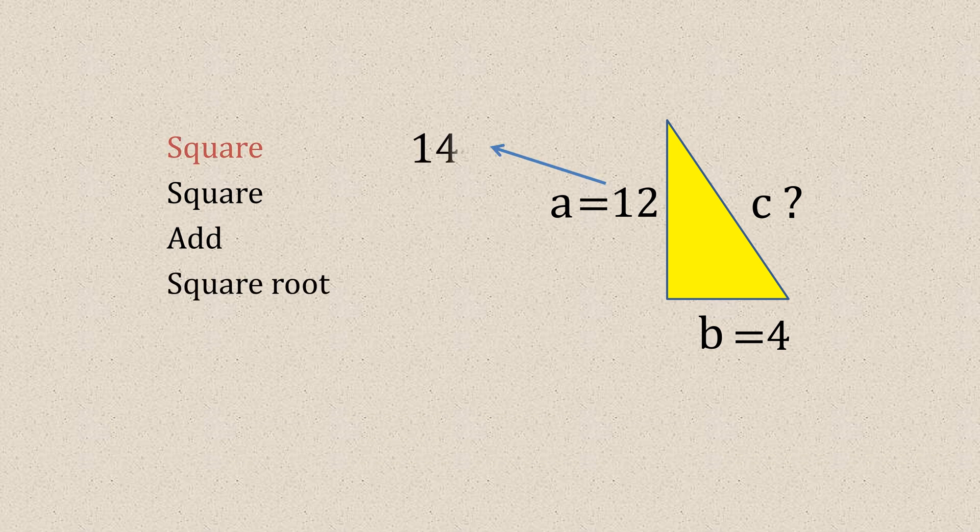So our a equals 12. So if we square that, gives us 144. And b equals 4. If we square that, that gives us 16. Now we don't know what c is, so what we need to do is add these two figures together, which gives us a total of 160.